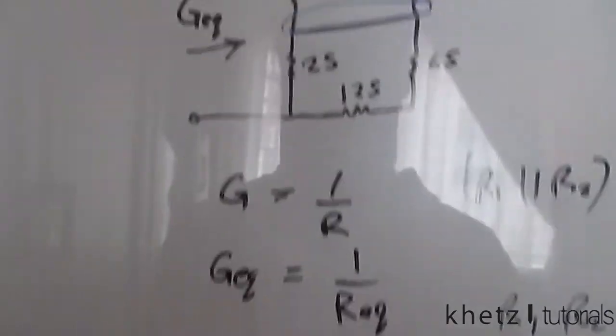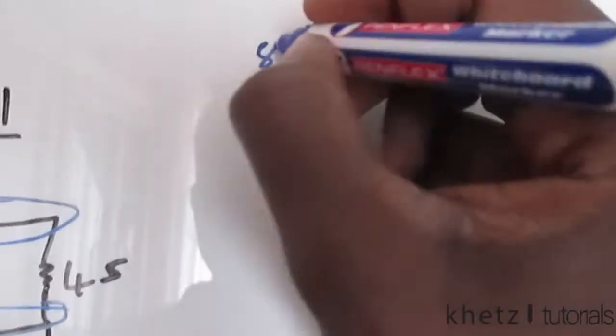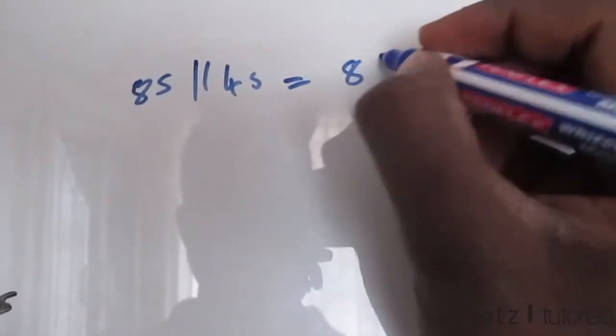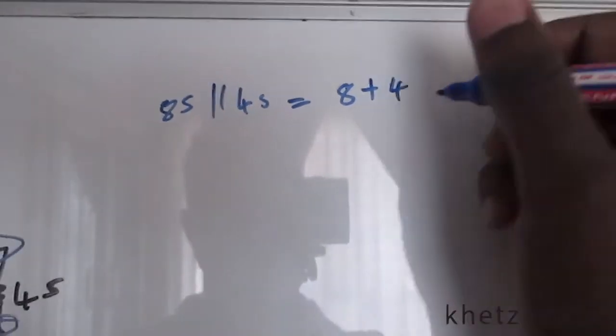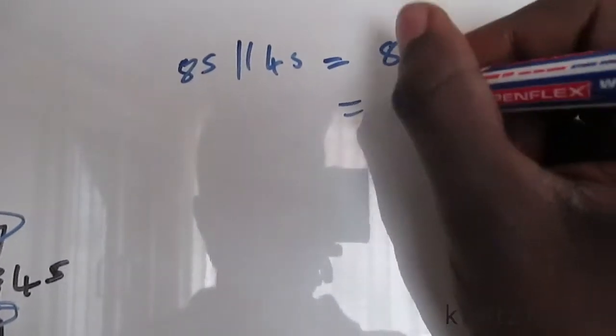So eight, let's write it down up here. So eight Siemens in parallel with four Siemens gives us eight plus four, which is 12 Siemens.